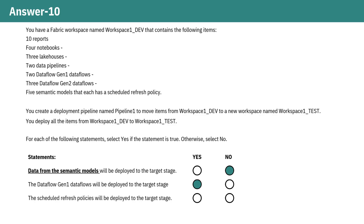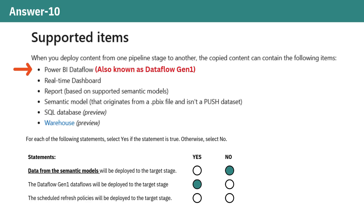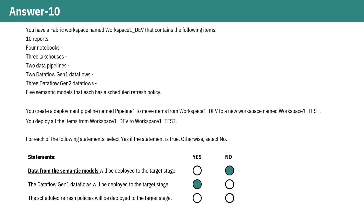The second statement — the Dataflow Gen1 data flows will be deployed to the target stage — is Yes, because data flows in Fabric and Power BI are part of the deployment pipeline and they can be deployed between workspaces. So Dataflow Gen1 data flows will be deployed to the target stage, Workspace 1 Test, as part of the pipeline deployment.